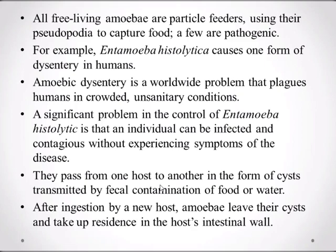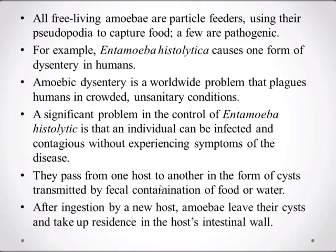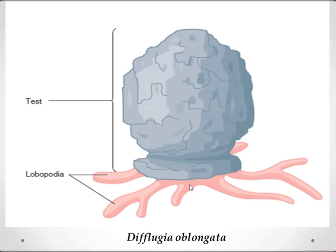Here is the anatomy of Amoeba proteus. You can see the ectoplasm, endoplasm, nucleus, and pseudopodium, as well as two types of vacuoles — the phagocytic and the contractile vacuole. This is also the Difflugia, showing its test and the lobopodia.